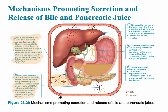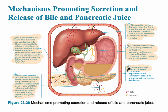The next step is bile secretion by the liver, which acts on the fatty chyme present. The gallbladder contracts as a result of CCK being secreted into the blood. Finally, the hepatopancreatic sphincter relaxes and opens, allowing bile and pancreatic juice to enter the duodenum to conclude digestion of fatty molecules in the small intestine, specifically the duodenum.